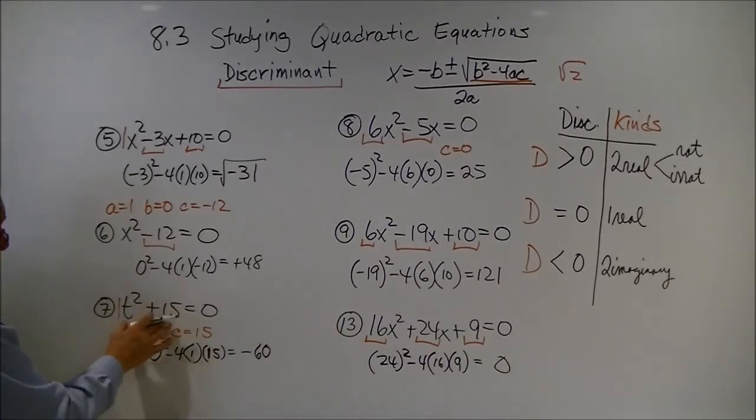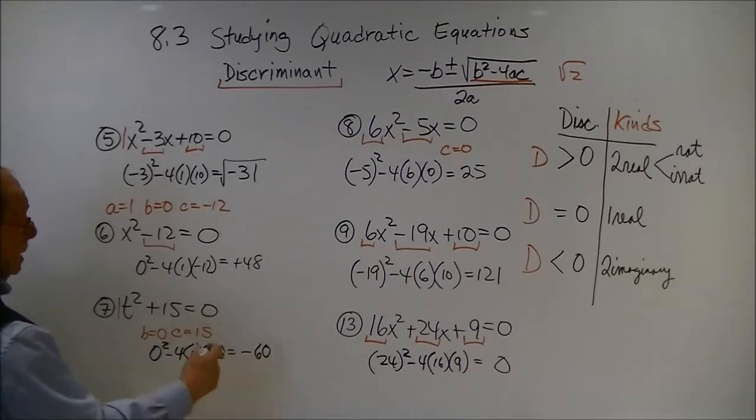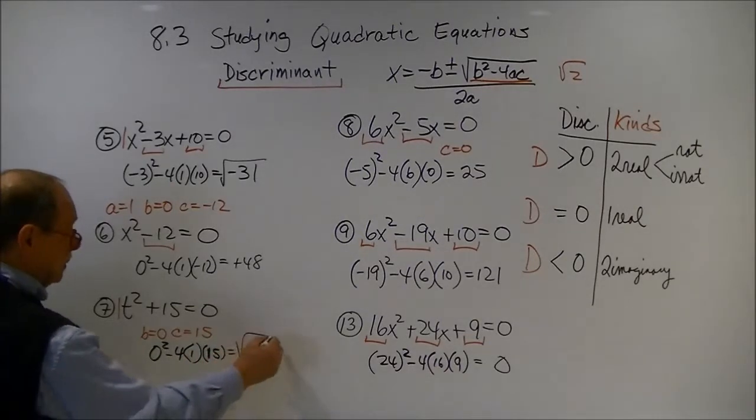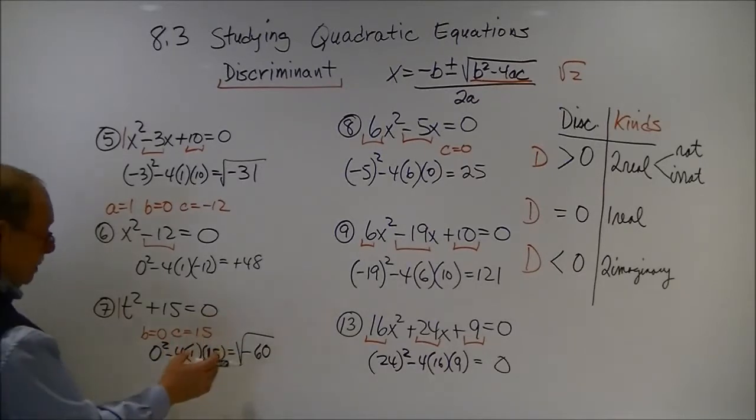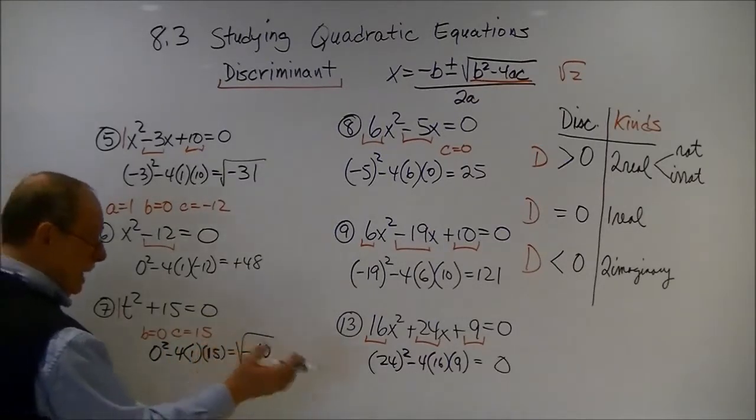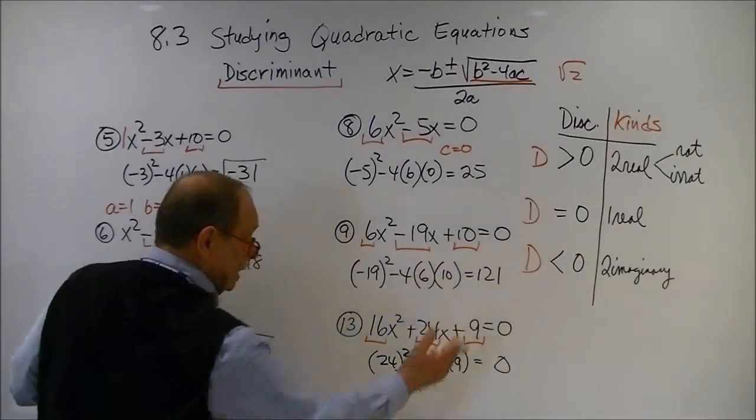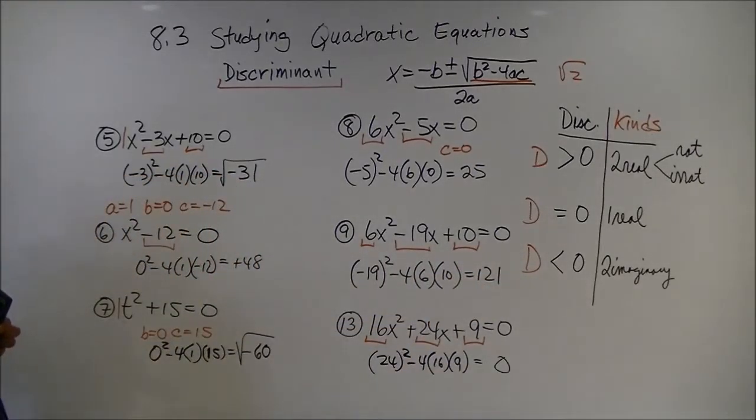Here, when I plug this into the discriminant, I get a negative 60. Again, when I take the square root of that, that's going to be an imaginary number. So, our discriminant is a negative number, less than 0. It's going to be two imaginary solutions.